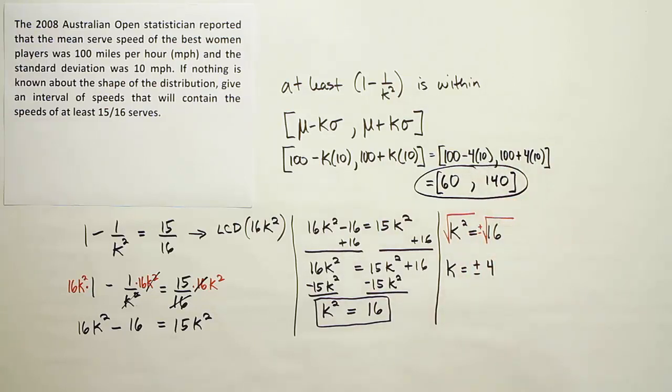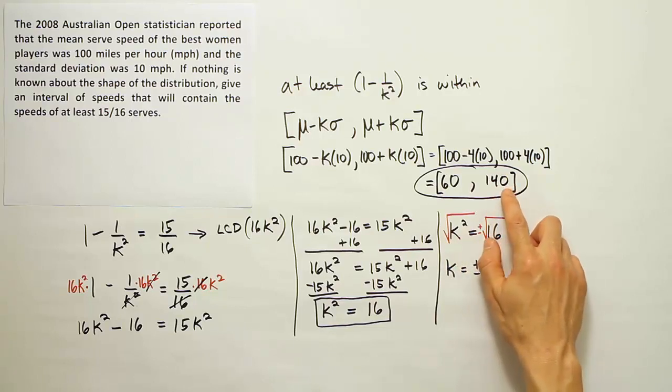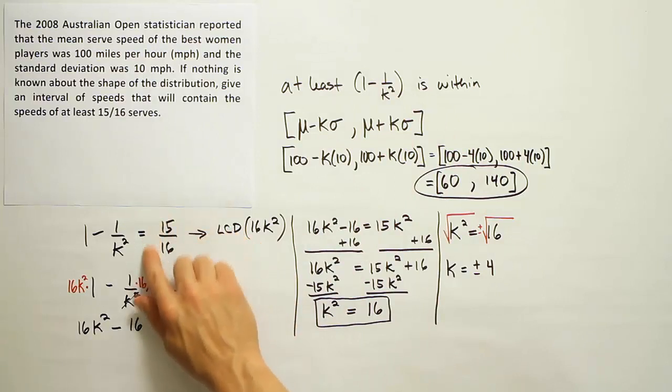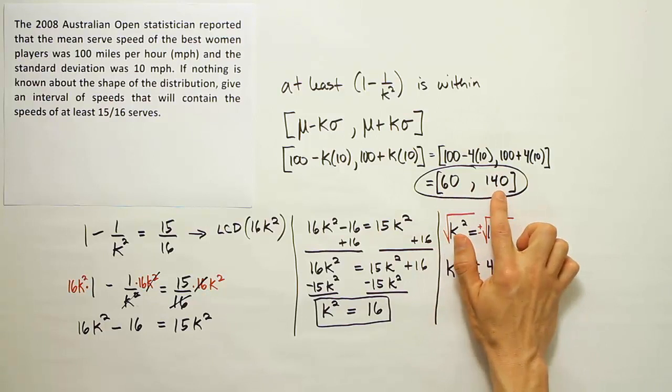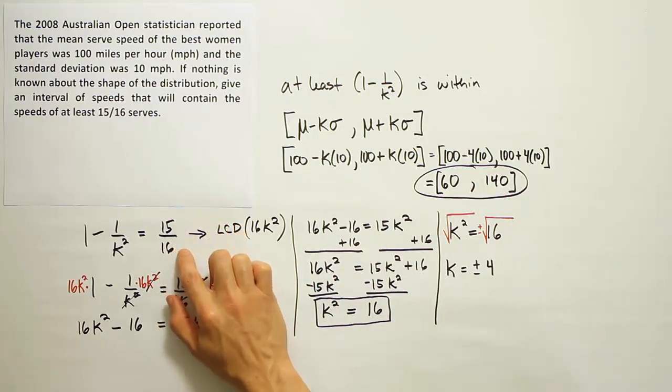We could check this result by taking this 140 and using it to calculate k, and confirming that that k is 4, and then you can plug that 4 back into here and see that your fraction becomes 15 over 16. So the interval of 60 miles per hour to 140 miles per hour captures at least 15 over 16 of the serves.